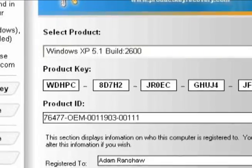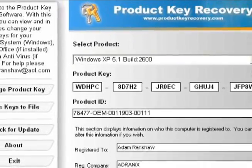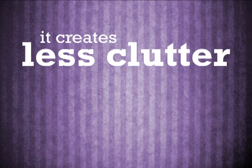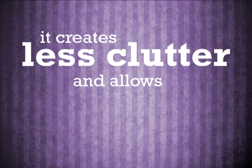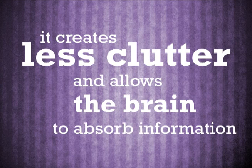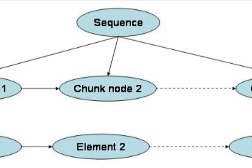chunking is best suited to help in situations where the commitment of information to working memory is required. It creates less clutter of information and allows the brain to better absorb the information. As we can see with the addition of spacing and delimiters under the date of birth, all information can be recognized at ease in a short period of time.